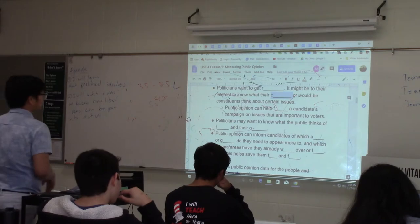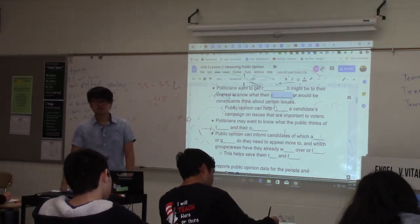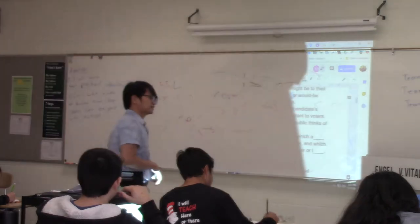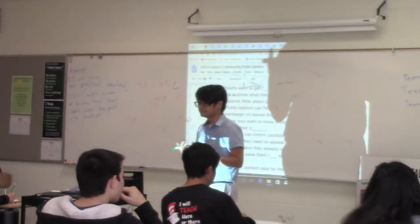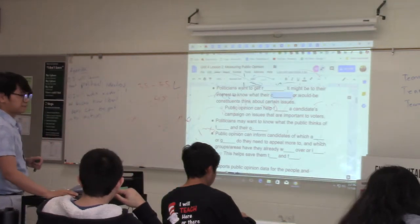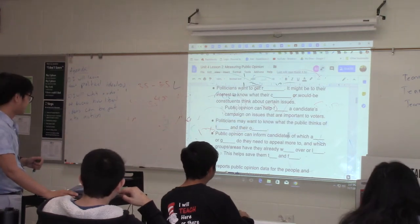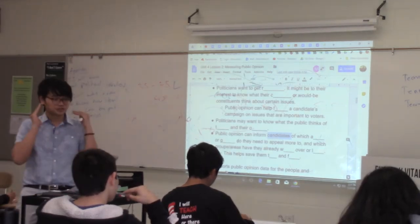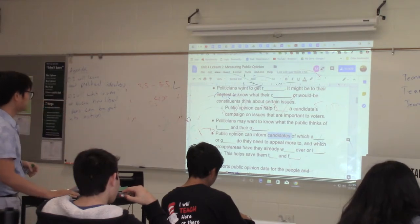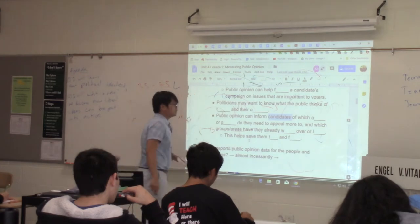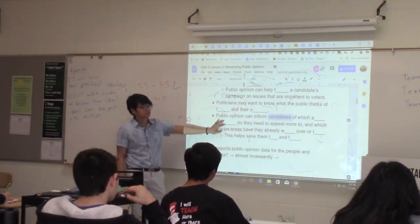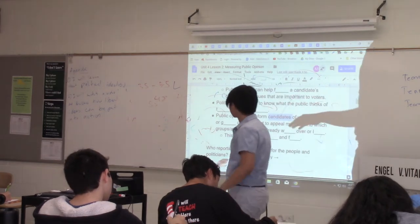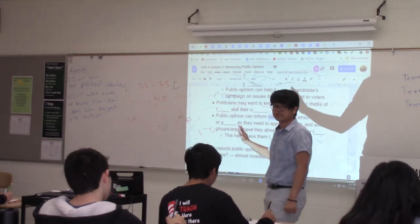Politicians may also want to know what the public thinks of themselves and their opponents. What do voters find attractive about the candidate? What do they find off-putting? Do voters think the candidate is trustworthy or doesn't dress well? Those things are very important for a campaign. Polling also gives you information about your opponents — what voters like about them — so you can try to pinpoint and counter those attributes. This is especially important for presidential elections.